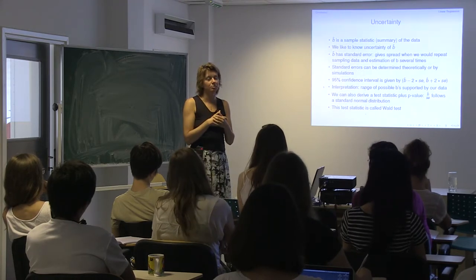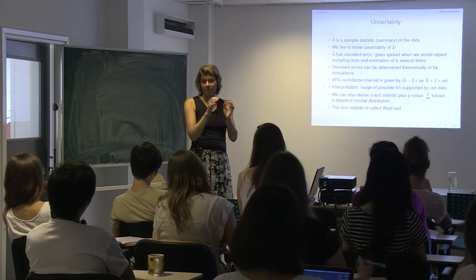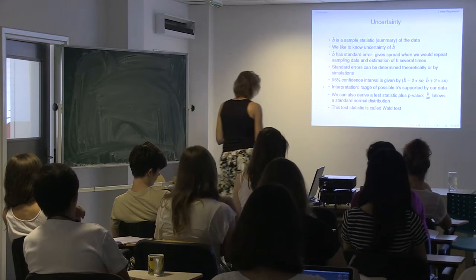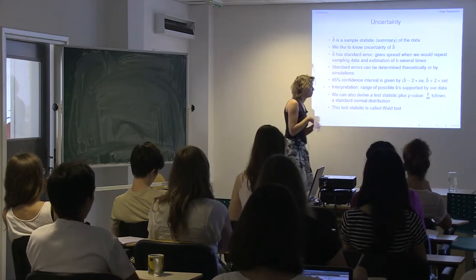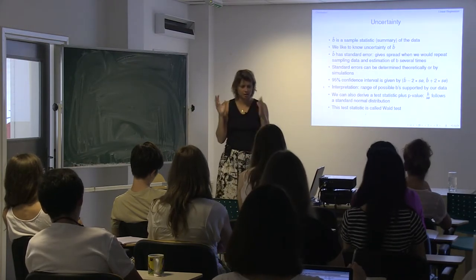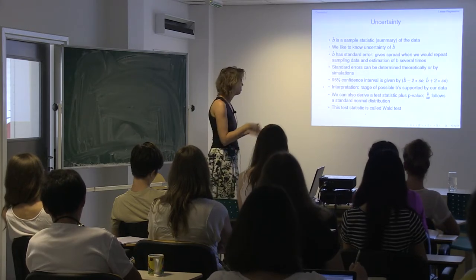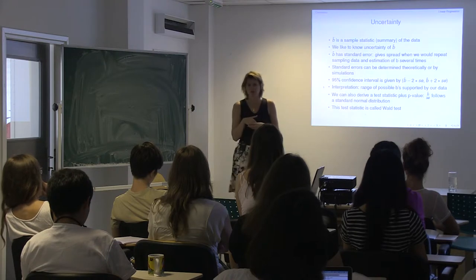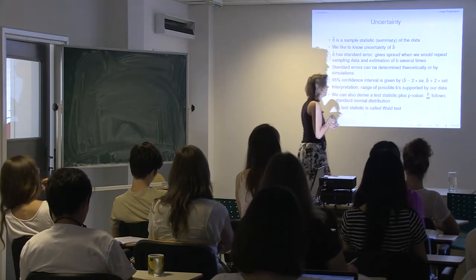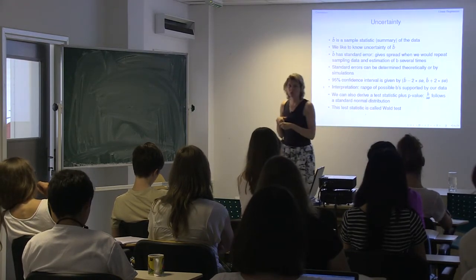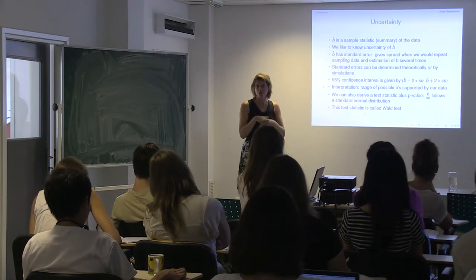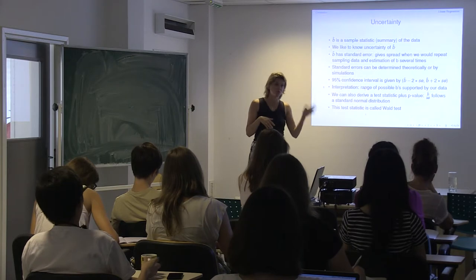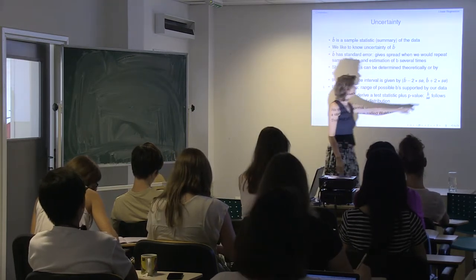Our data suggests the true b should be in this interval. The best b is b̂, but the true b could be left or right of b̂ — we think it should be in this interval. Some clients only want p-values, others want confidence intervals; I think confidence intervals give more information. To get a p-value, divide your β̂ by the standard error; this follows a normal distribution. If it's larger than 2 or smaller than minus 2, it's significant. This test is called a Wald test.